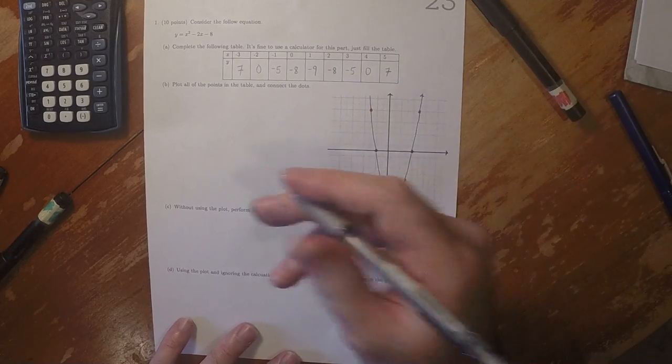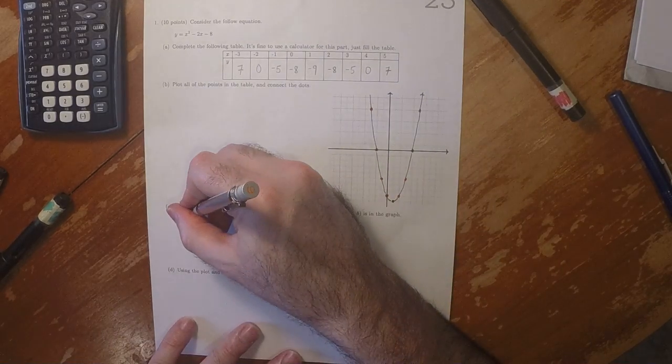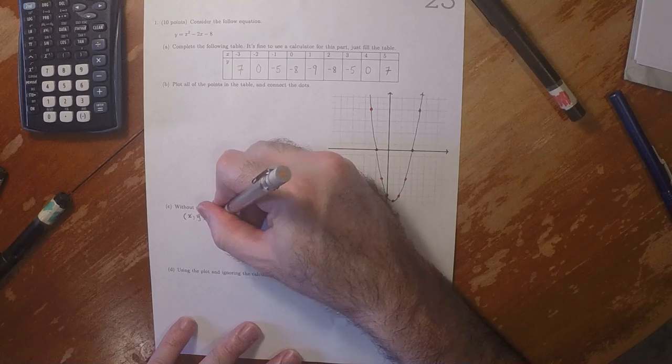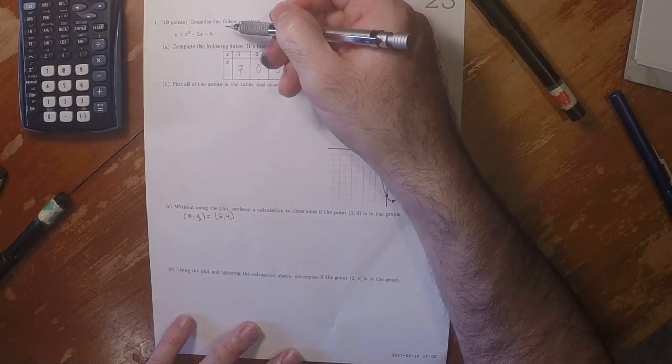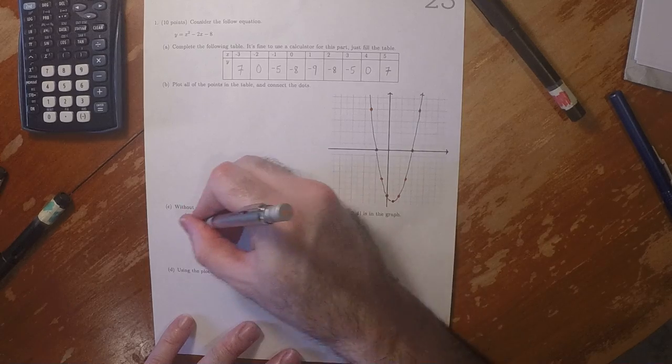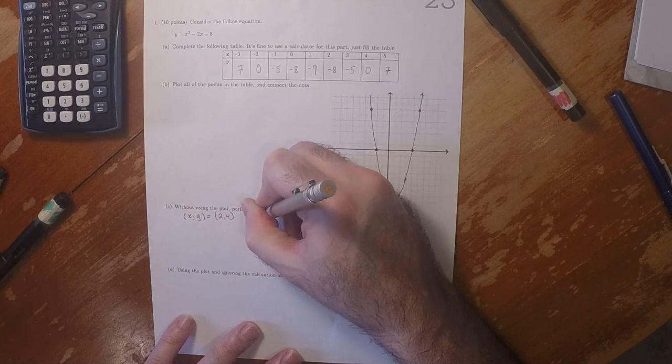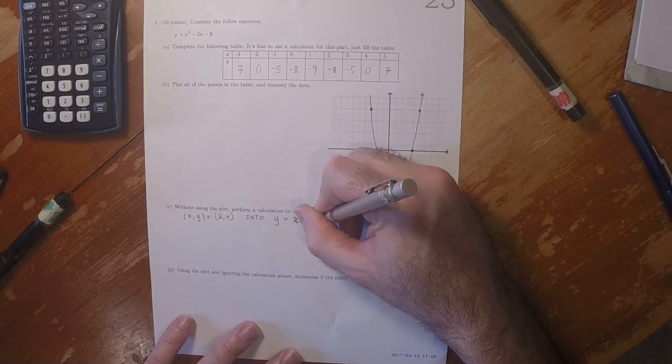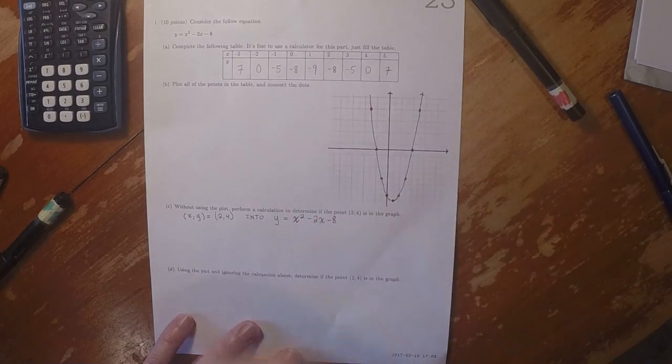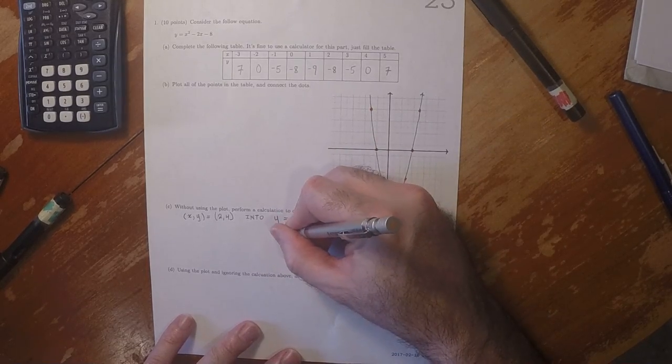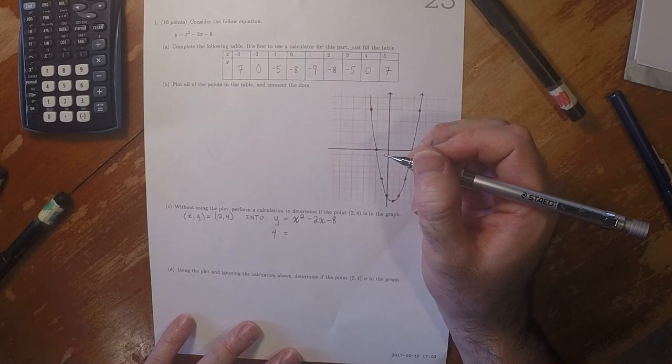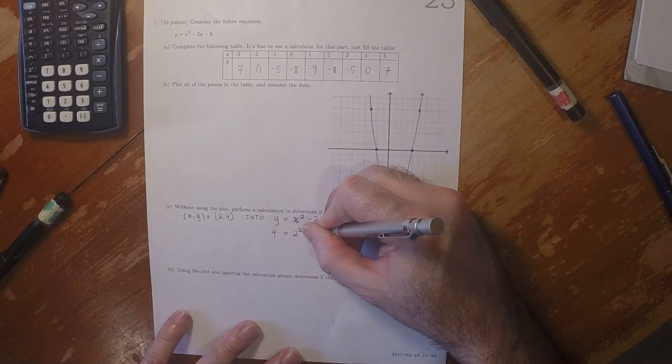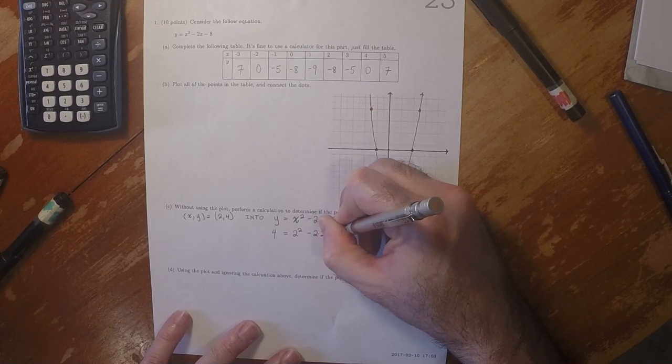Is (2, 4) in the graph? Let's evaluate at x, y equal to 2, 4, which is to say take this point and plug it into y = x² - 2x - 8. So that would be 4 = 2² - 2(2) - 8.